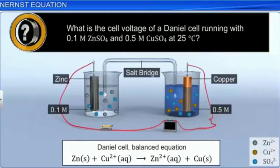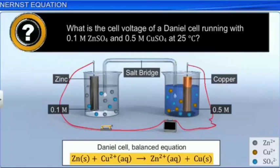Let's work through a typical problem involving the Nernst equation. What is the cell voltage of a Daniel cell running with 0.1 molar zinc sulfate and 0.5 molar copper 2 sulfate at 25 degrees Celsius? The balanced net ionic equation is given here.